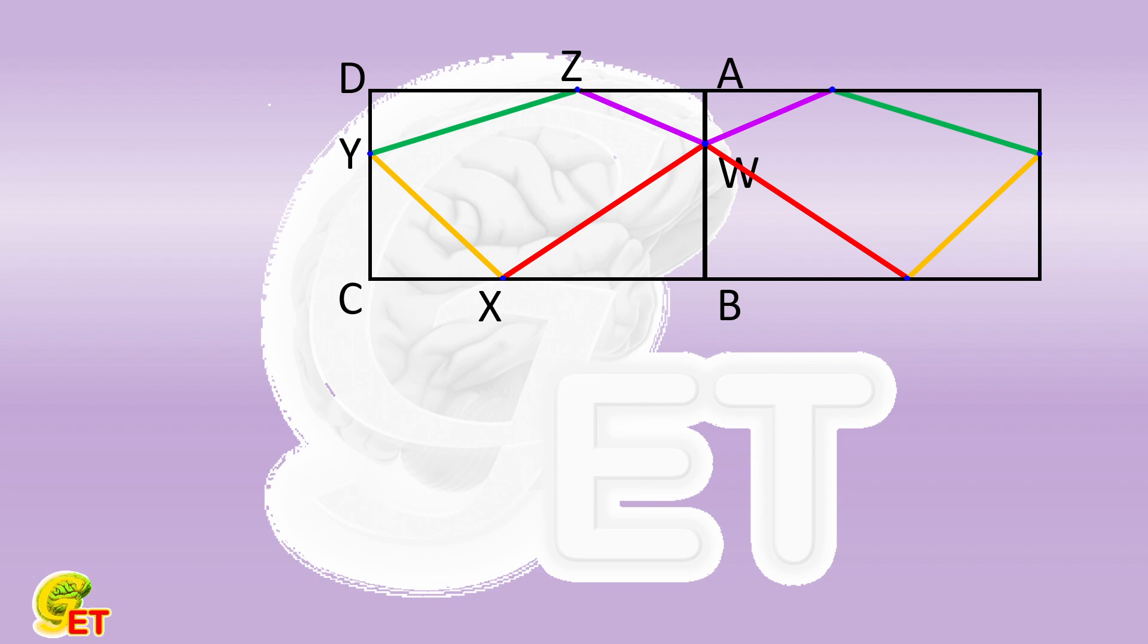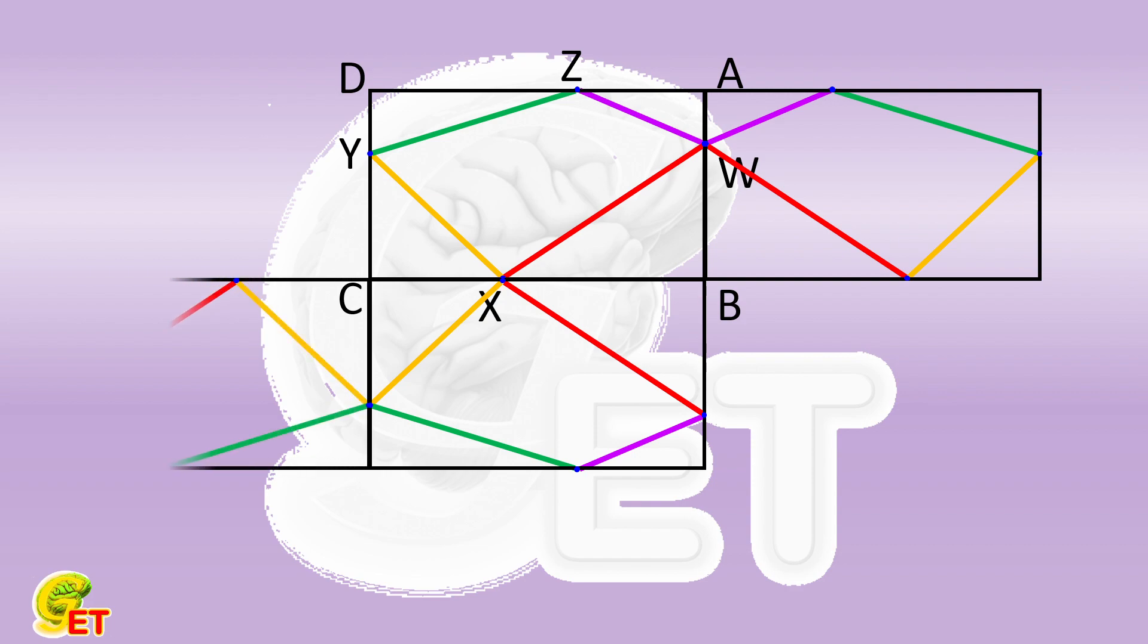Then take BC as the axis of symmetry, to plot downward the symmetric one of the original figure. Finally, we plot to the left direction the symmetric one of the new figure.